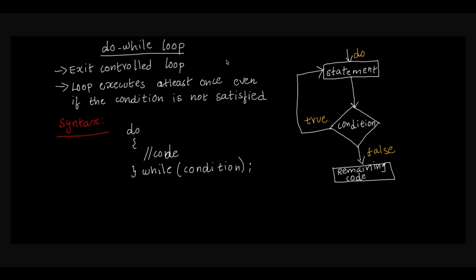If we look at looping condition statements, we will look at entry control loop versus exit control. For entry control, we check the condition first, then execute the statements. For exit control (do-while), it is the opposite — we execute the statements first, then check the condition. The motto is that the do-while loop executes at least once even if the condition is not satisfied.